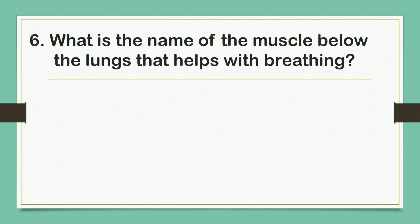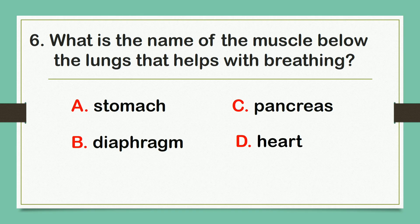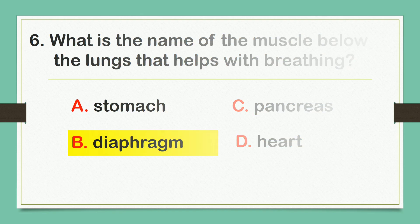What is the name of the muscle below the lungs that helps with breathing? Letter A. Stomach. Letter B. Diaphragm. Letter C. Pancreas. Or D. Heart. And the correct answer is letter B: Diaphragm.